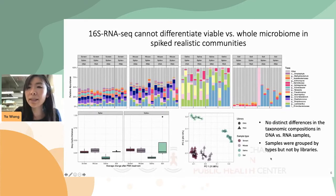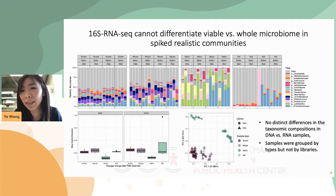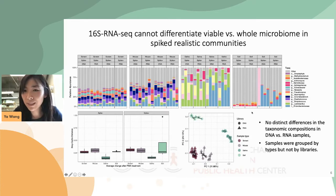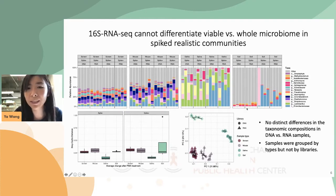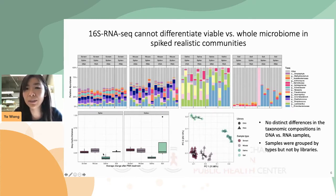However, when we applied this to pre-spiked community samples, 16S RNA-seq produced almost no differentiation between the DNA versus RNA libraries. The stack plot here shows the most abundant taxa across the sample types. As you can see, the RNA libraries look basically the same as the DNA ones, regardless of sample type or whether they were spiked or not. The Bray-Curtis dissimilarities between DNA and RNA libraries were very low, and samples clustered by sample type in principal coordinate analysis, not by library type.